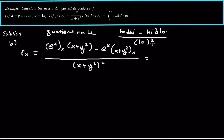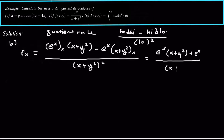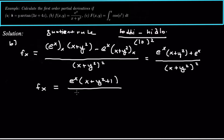Carrying out the derivatives in the numerator: derivative of eˣ is eˣ, and derivative of (x + y²) with respect to x is 1. So the numerator becomes eˣ(x + y²) + eˣ·1. Factoring out eˣ gives f sub x = eˣ(x + y² + 1) over (x + y²) squared.